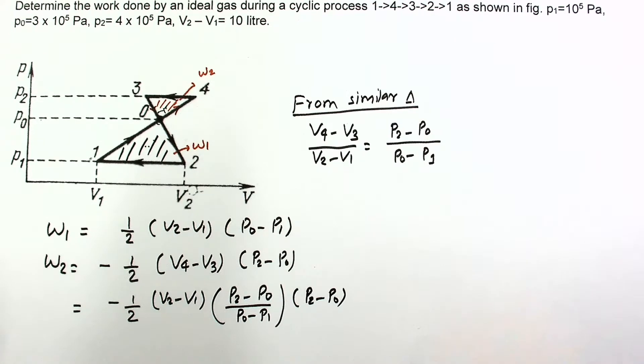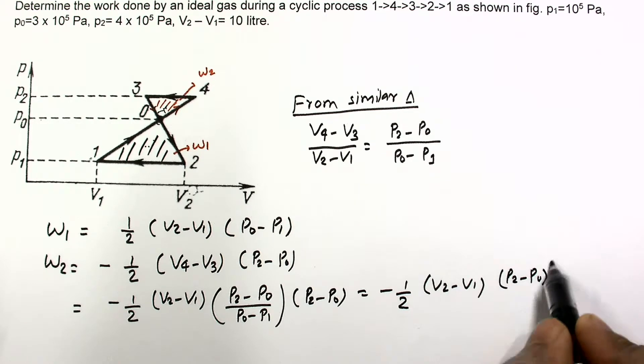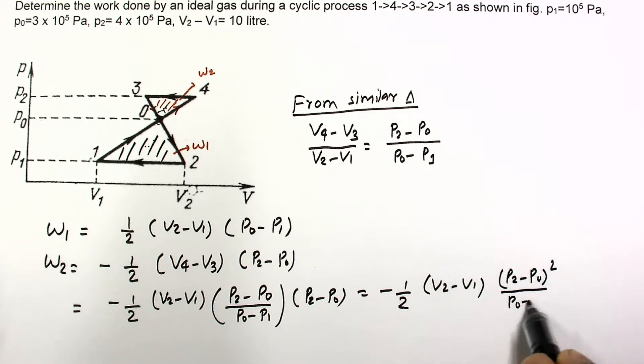So now the remaining calculation, V2 minus V1, P2 minus P0 square divided by P0 minus P1.